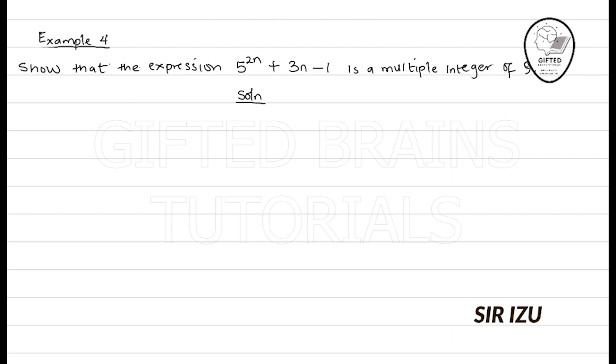Quite easily done. What the question is asking us to do is that we should prove that 5^(2n) + 3n - 1 is a multiple of 9. It's 9 times something. Well, it is a little bit different from the other questions we've been solving, but the method is still very, very similar.